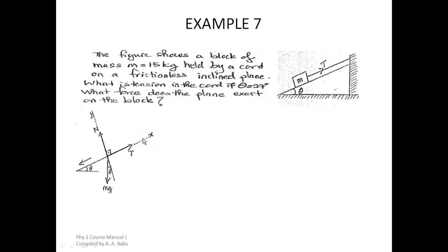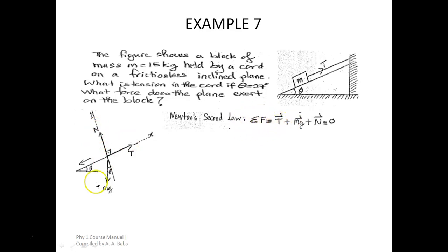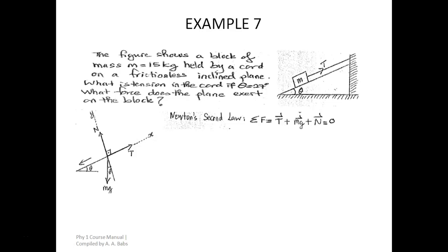According to Newton's law, the summation of all forces acting on a block resting on a surface is equal to zero. So the sum of tension T, weight mg, and normal force N equals zero. We are not yet discussing direction — we just establish that the summation of all forces equals zero, and then we address signs and direction.